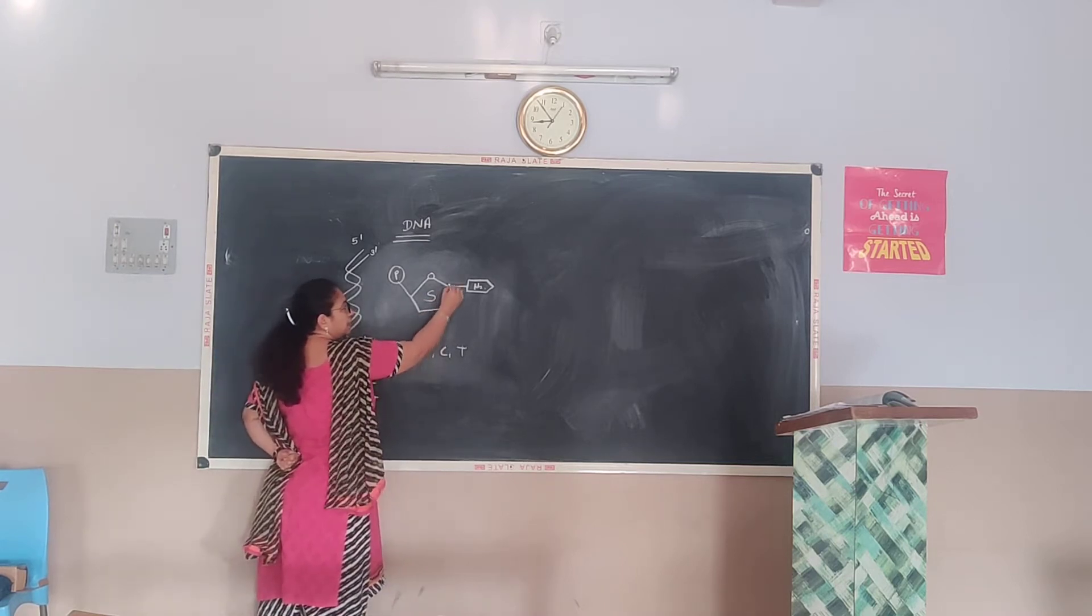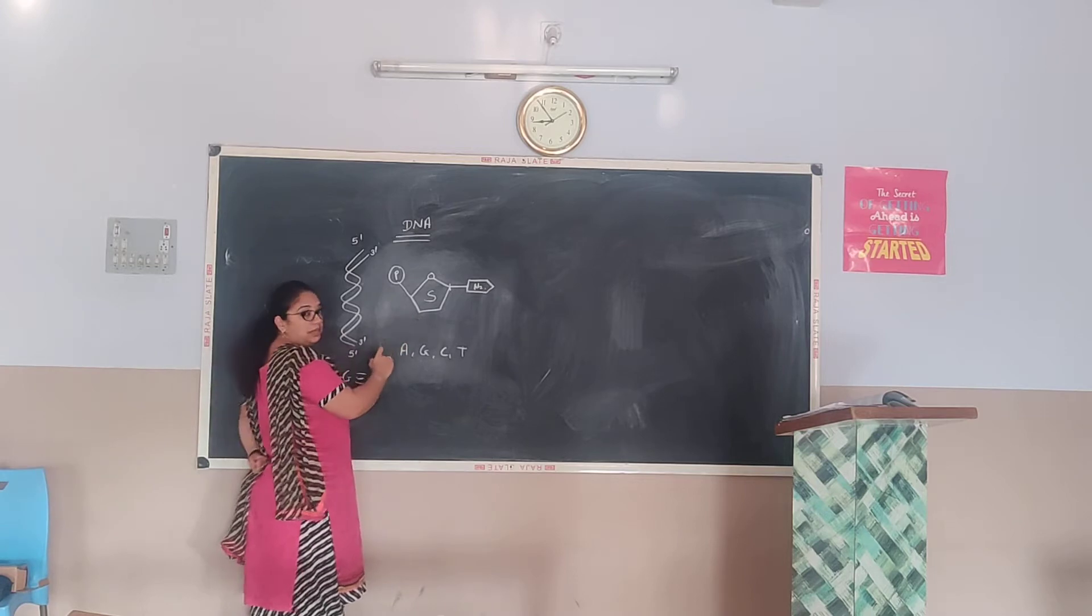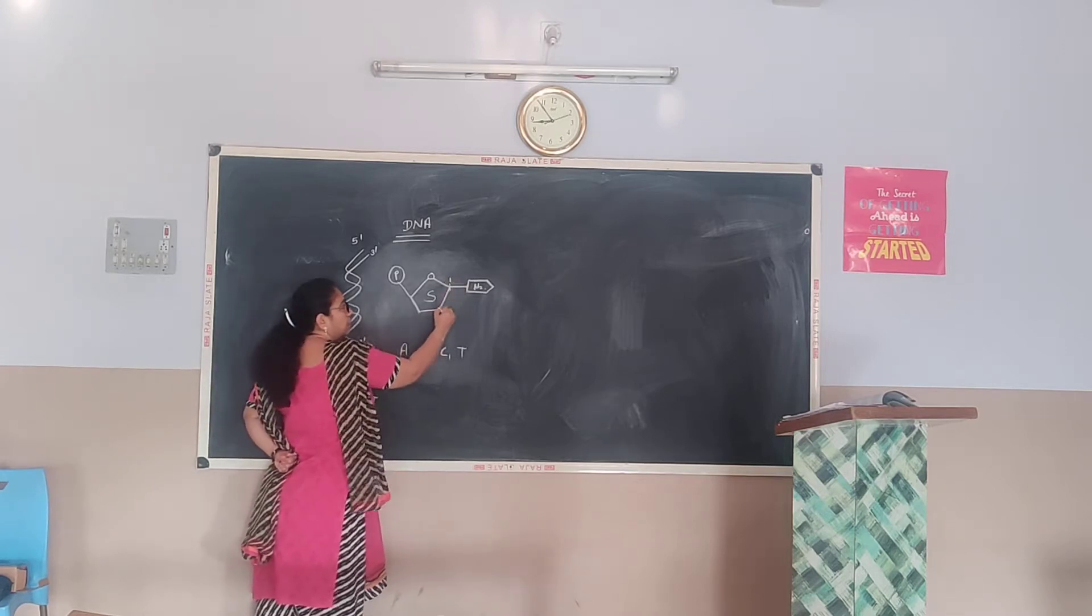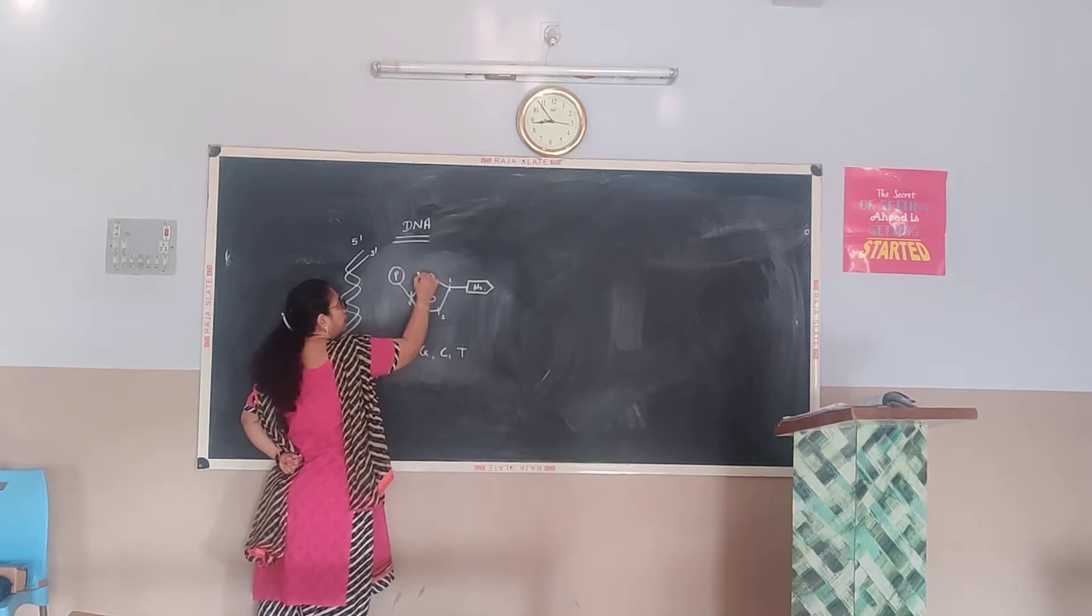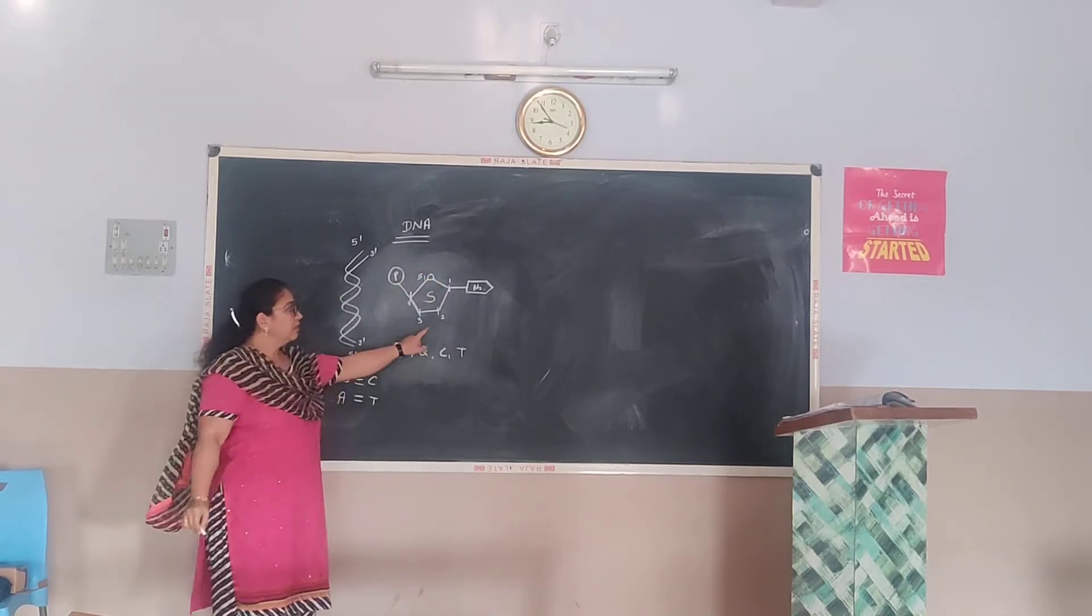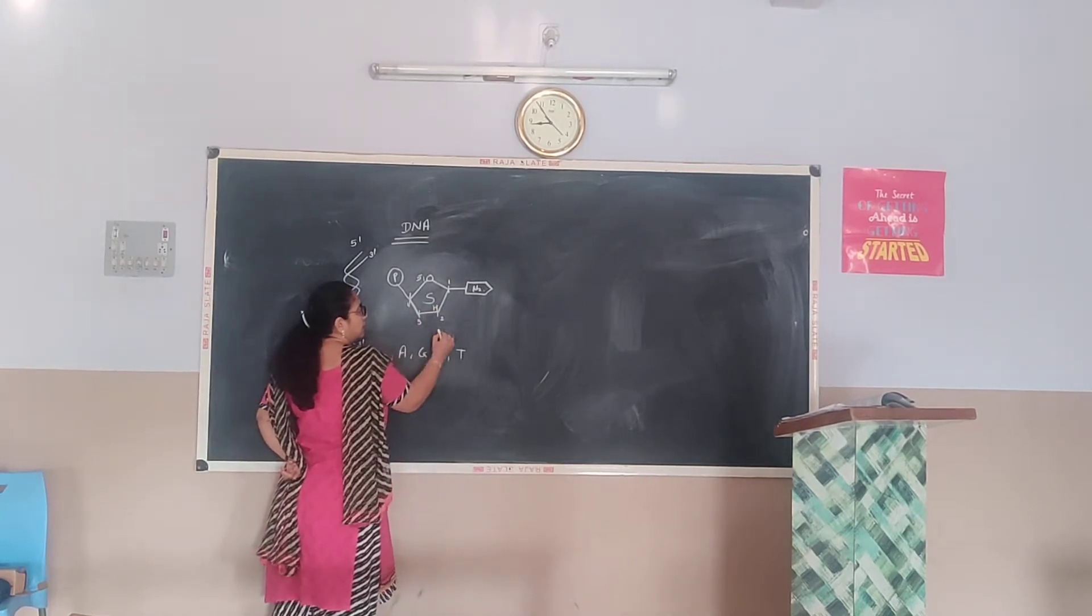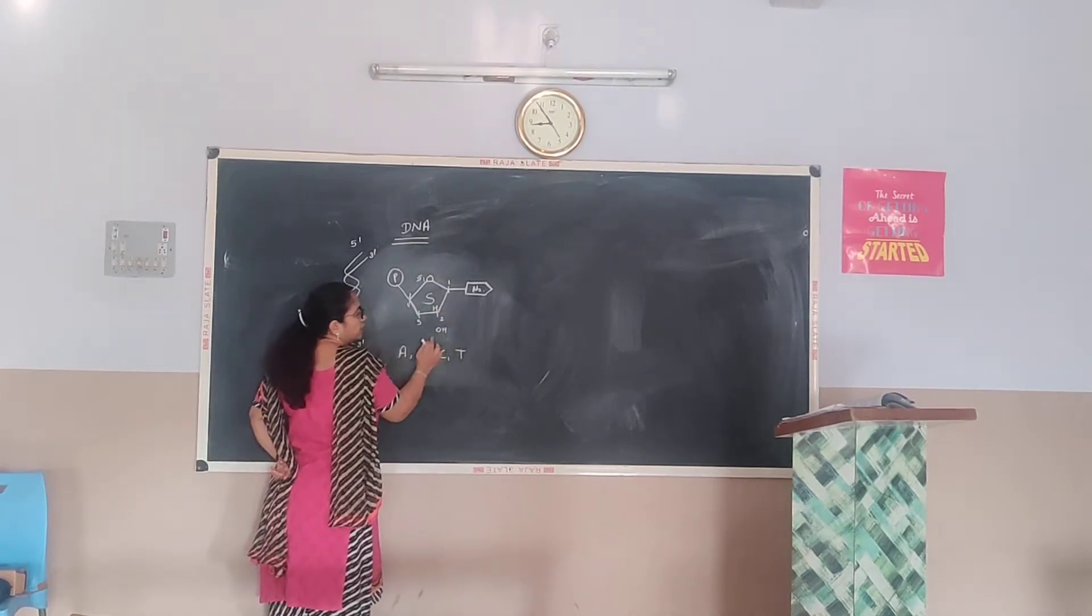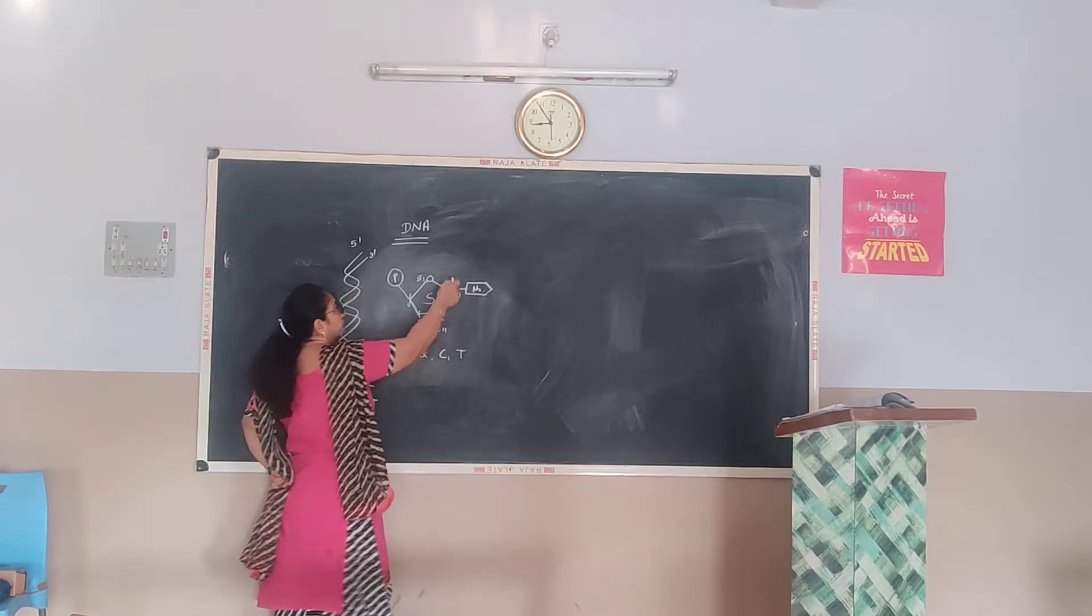From here you can see, in structure of DNA, pentose sugar is there, right? So carbon 1, carbon 2, carbon 3, carbon 4, and carbon 5. So on second position of carbon, oxygen is less. Instead of OH, this oxygen is less. In case of RNA, this oxygen is present.